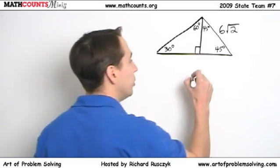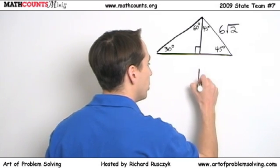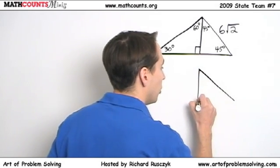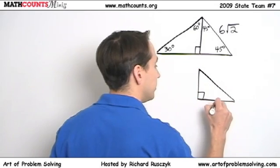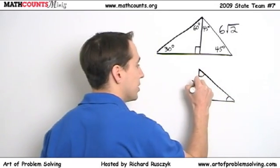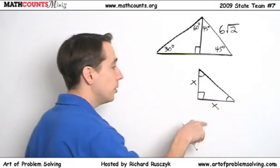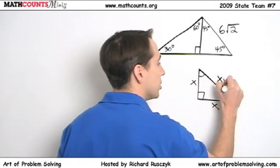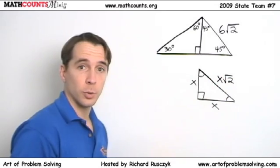Now, we'll quickly review those facts so we make sure we use them right. First, the 45, 45, 90 triangle. In a 45, 45, 90 triangle, these two angles are equal so the opposite sides have the same length, the legs do. And then the hypotenuse is just the leg length times the square root of 2.